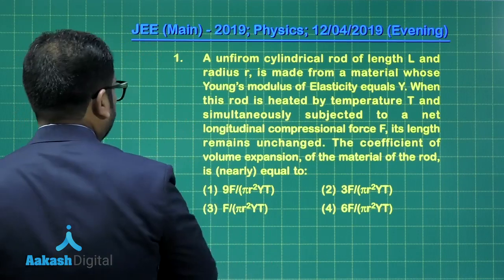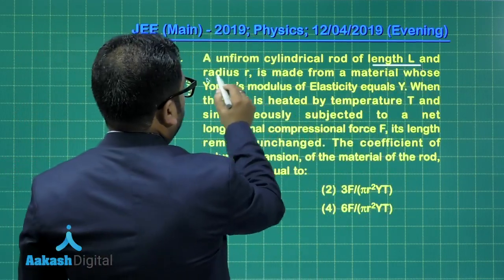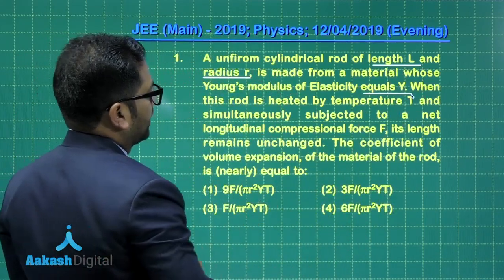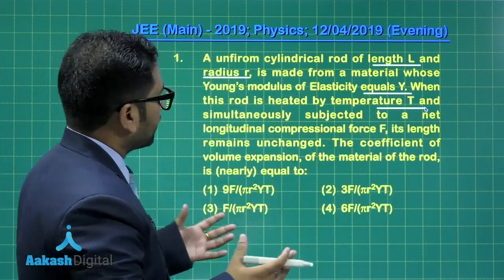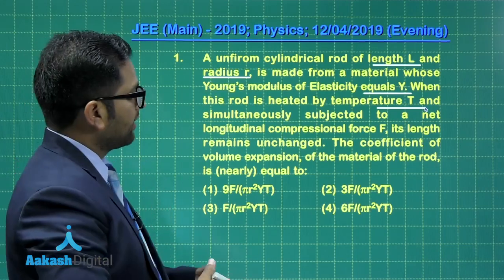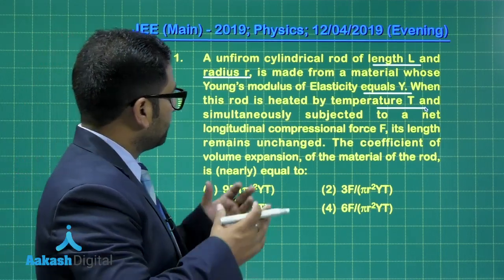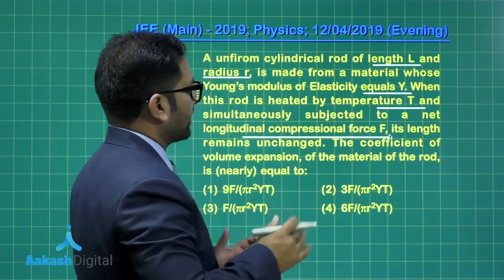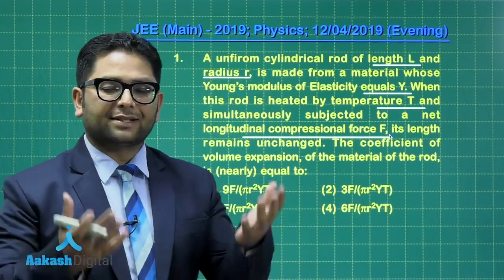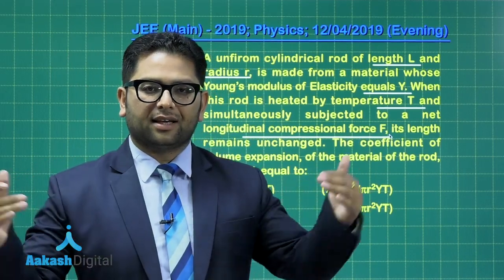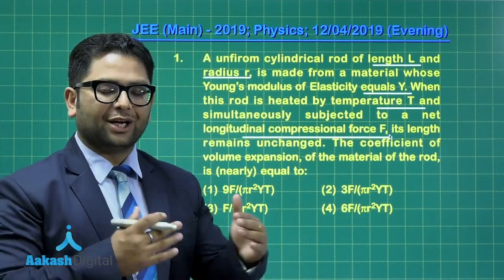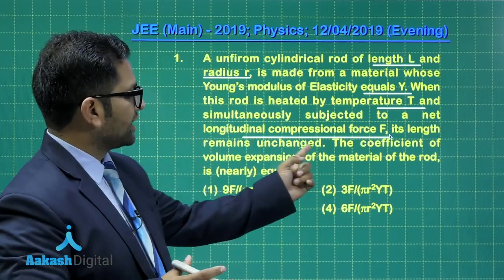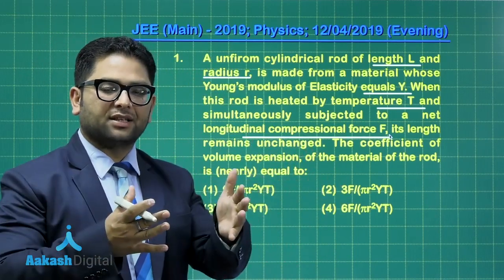We have a uniform cylindrical rod of length L, cross-section radius r, and modulus of elasticity Y. This rod is heated by temperature T. If the rod is heated, the length would increase, but simultaneously it has been subjected to a longitudinal compressional force F. The rise in temperature tries to increase the length and the compression tries to decrease the length, so there are two things happening. Effectively the total length is unchanged, meaning the expansion and contraction effects are exactly nullifying.